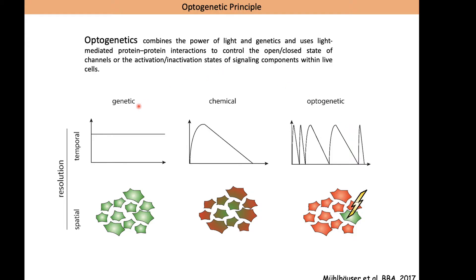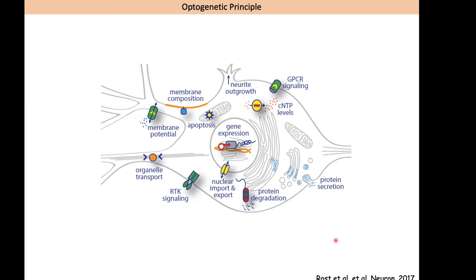The same is true with spatial resolution. With genetics or chemicals, most of the time we treat a group of cells or tissue. But now with optogenetics and the focalization of a laser, we are able to focus on one cell within a group. Optogenetics gives us the opportunity to manipulate cell signaling at the cellular level — a spatial resolution never achieved with classical approaches before.